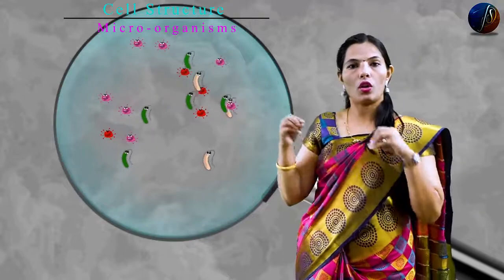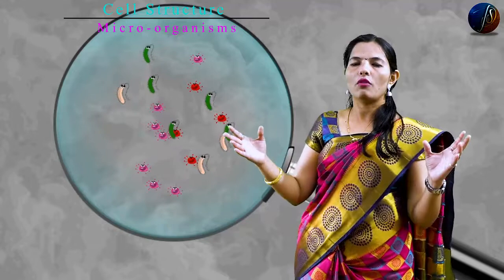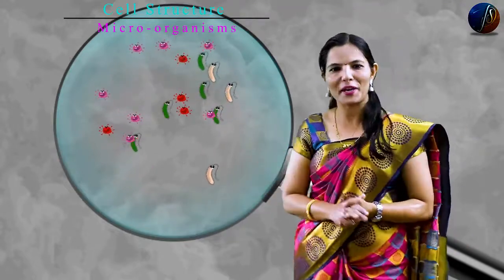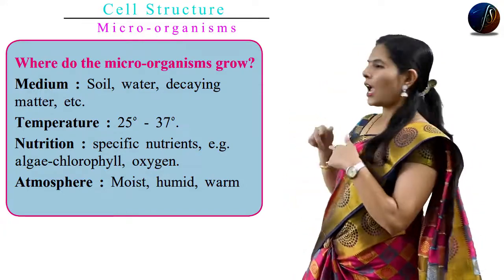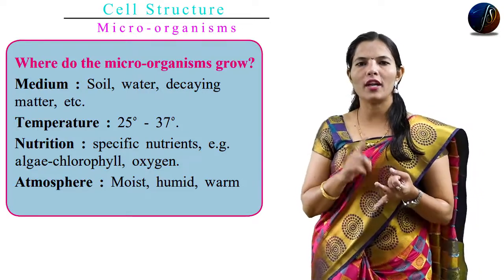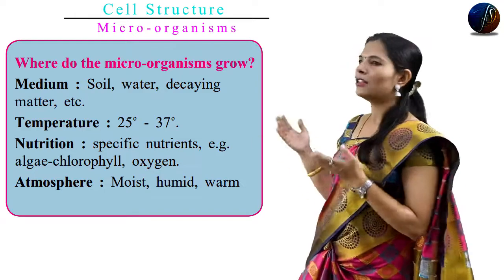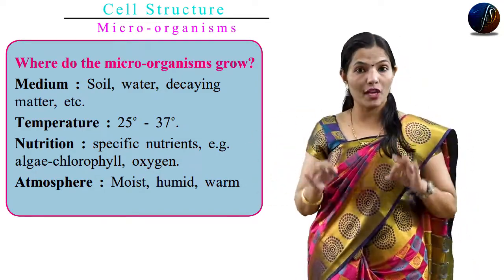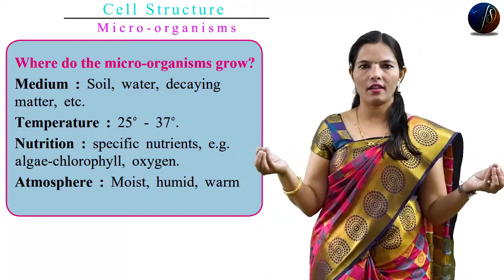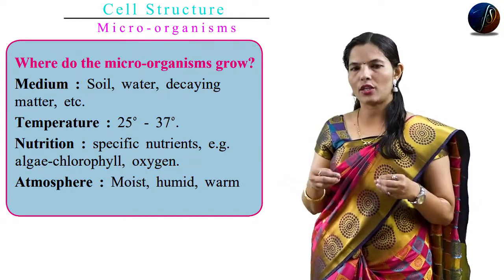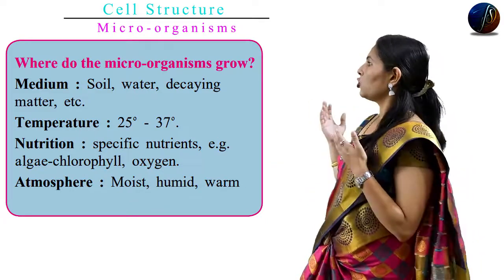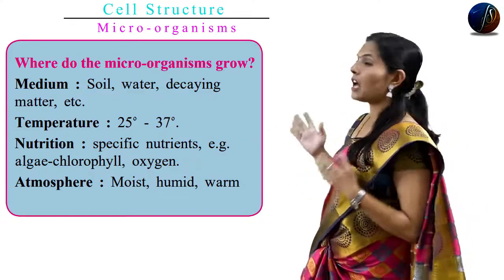So the conditions for microorganism growth include: warm conditions, cold conditions, and availability of oxygen. Some conditions include moderate temperature such as 2.5 to 37 degrees. The environment includes soil, water, and other media. Nutrients in the environment are also important. Some microorganisms perform photosynthesis using chlorophyll and chloroplasts, producing oxygen. Overall, warm and humid conditions are favorable for the growth of microorganisms. This covers all the growth conditions of microorganisms.